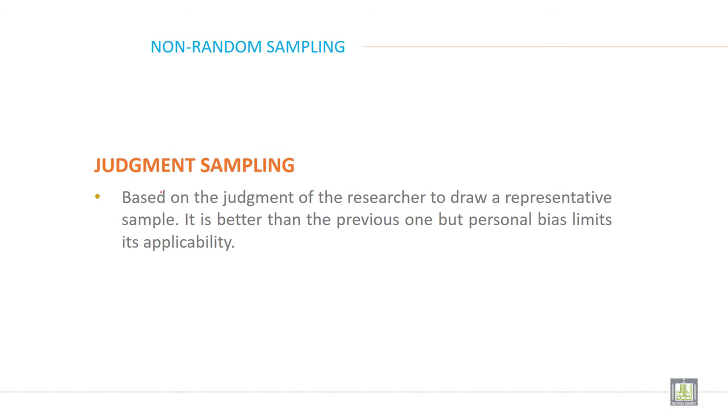Judgment sampling is based on the researcher's judgment to draw a representative sample. It's better than convenience sampling, but personal bias limits its applicability.